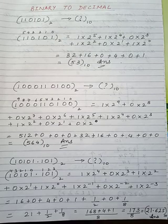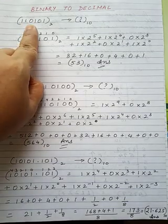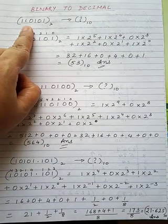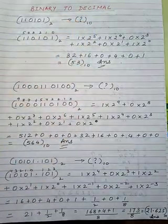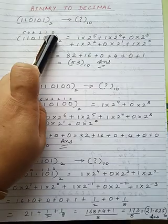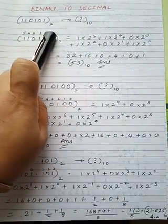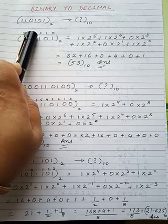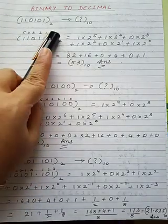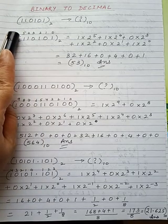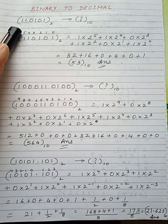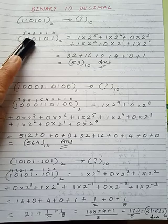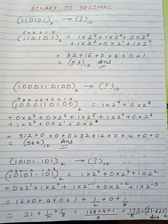We now come to the next conversion: binary to decimal, which is the opposite of decimal to binary. We have taken the binary number 11010101 base 2 and are converting it into a decimal equivalent. First we write the binary number. Then starting from the right, we write the position numbers starting from 0: 0, 1, 2, 3, 4, and 5. Since there are 6 digits, the numbers go from 0 to 5. Wherever there is a 1, we write 1 × 2 raised to the power of the position number; wherever there is a 0, we write 0 × 2 raised to that power, and then add all these terms.